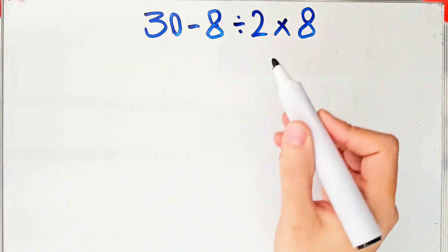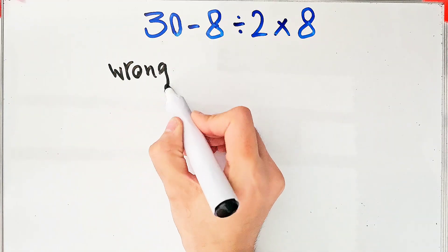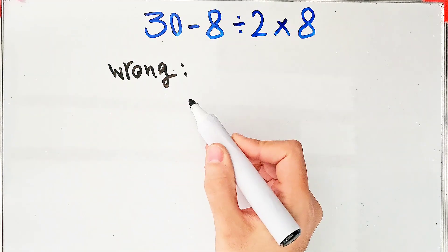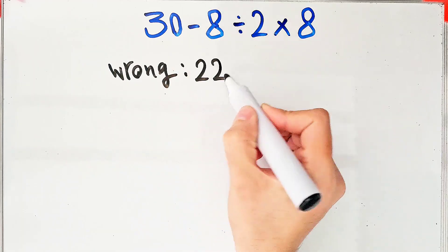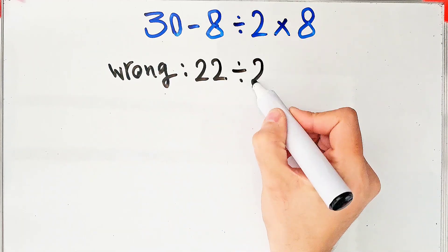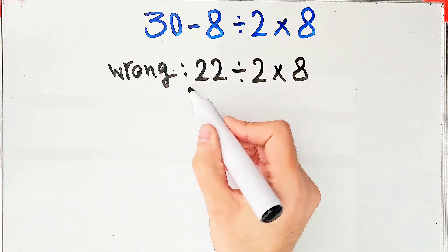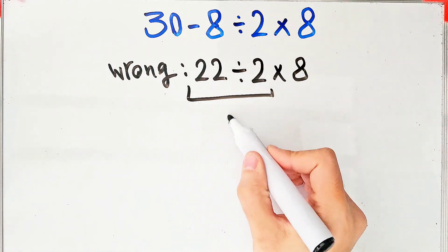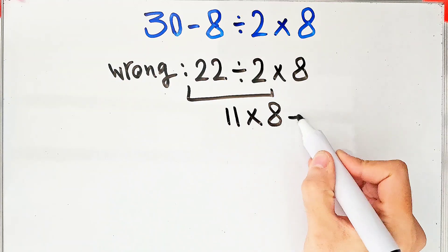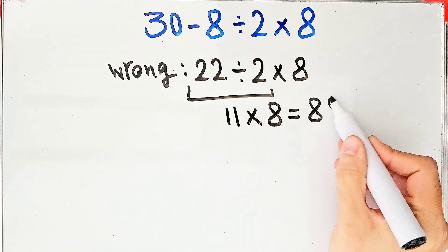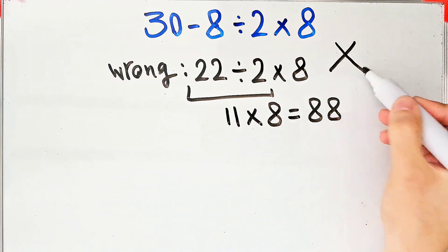In the wrong way of solving this question, some people start from the left and they don't pay attention to the priority of the mathematical operations. 30 minus 8 equals 22, 22 divided by 2 then times 8, 22 divided by 2 equals 11, and 11 times 8 equals 88. But this answer is definitely wrong. Let's solve this question step by step together.